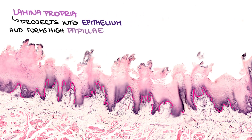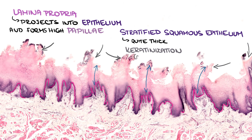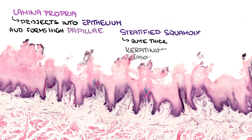The papillae are covered by stratified squamous epithelium, which is quite thick and undergoes a process of keratinization in the region above some lingual papillae. We distinguish 5 kinds of papillae: filiform, fungiform, conical, foliate, and velate papillae.